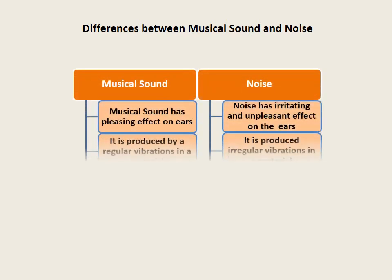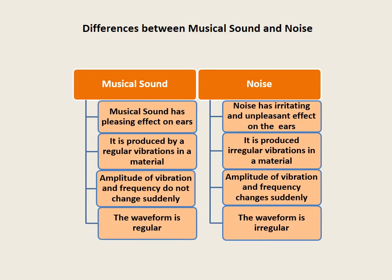Differences between musical sound and noise. Musical sound has a pleasing effect on ears, while noise has an irritating and unpleasant effect. In musical sound, regular vibrations are produced in a material; in noise, irregular vibrations are produced. Amplitude of vibration and frequency do not change suddenly in musical sound, but they change suddenly in noise. Wave form is regular in musical sound and irregular in noise.